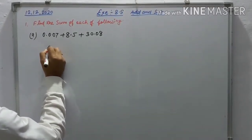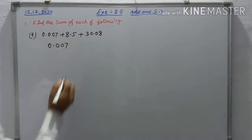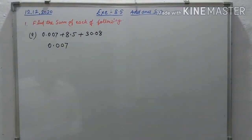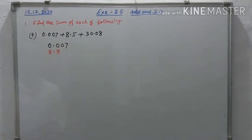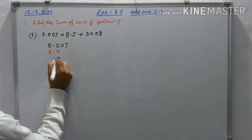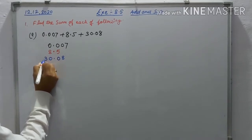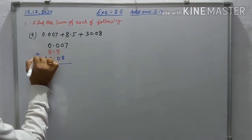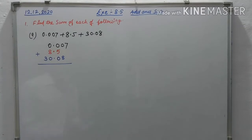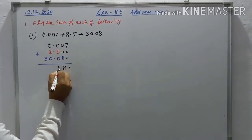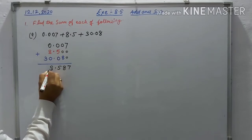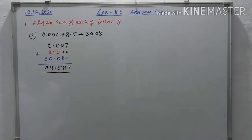First write 0.007, the second number is 8.5, and the third number is 30.08. Align the decimal points and add. We get 7, then 8, 5 — the answer is 38.587.